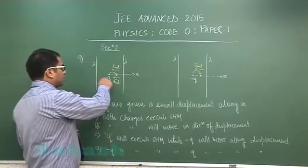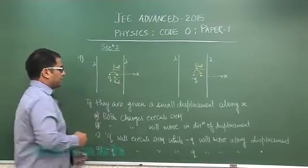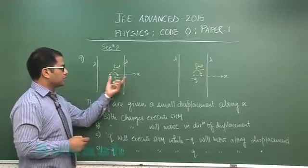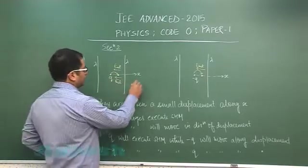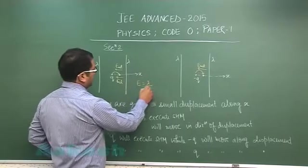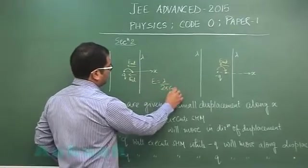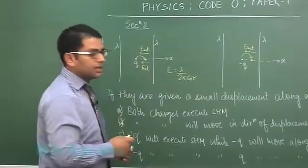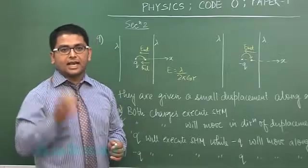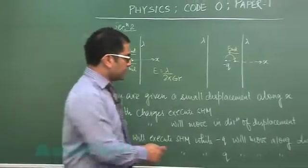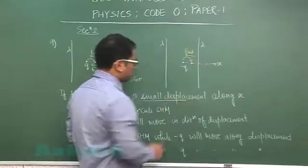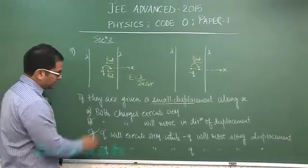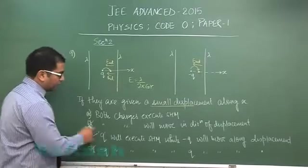You see that q executes oscillatory, that is very clear by observation, and if you calculate the net force using the value of electric field as lambda by 2 pi epsilon not r, you would find that the net force on q would be directed towards the mean and that would be directly proportional to x as well, provided the condition the displacement is small which is already given. So option number c would be correct and if c is correct, d would be incorrect.